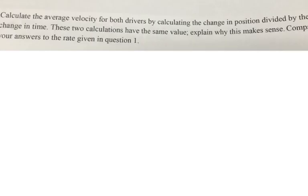Problem 3 says, what's the average velocity for both drivers by calculating the change in position divided by the change in time? These two calculations will have the same value. So explain why that makes sense. If you look at John's graph, the beginning point was at 0, 2 and a third, and the ending point was at 20, 14.